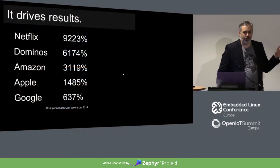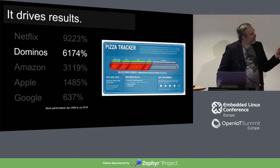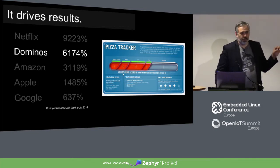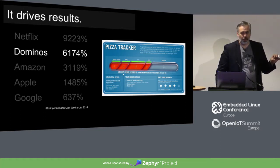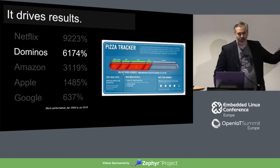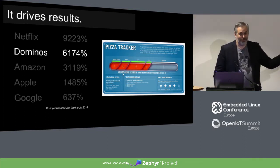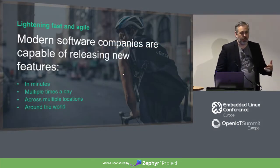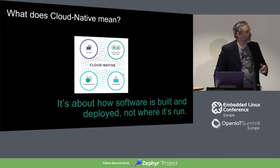Maybe one of these companies doesn't look quite like the others. Domino's was named one of the most innovative companies of 2017 — and it's a pizza company — because of digital. There are so many different ways to order pizza online; you can tweet a pizza emoji and get a pizza. They realize the power of their data. They're doing autonomous vehicles with Ford in Detroit to deliver pizza with an oven built in. If you think digital transformation is a buzzword, it's a pizza company.